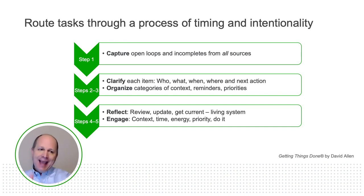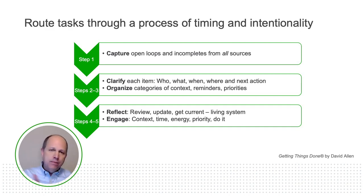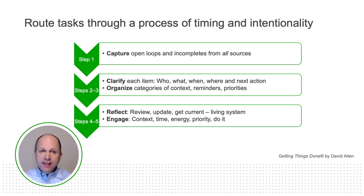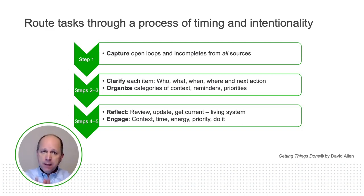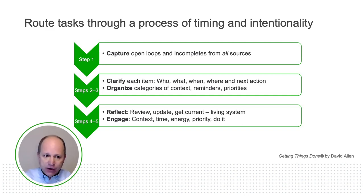In step one, I capture. Get it out of your inbox. Get it into notes. Get it into tasks. Capture, capture, capture. Then in steps two and three, I clarify: what is the who, the what, the when, the where? Who needs to act on this, and when do they need to act on it? Based on that clarification, I organize, categorize, create reminders — not the little pesky ones, but in a timetable system like a Gantt chart — and I prioritize and constantly reprioritize.